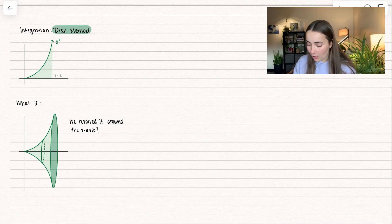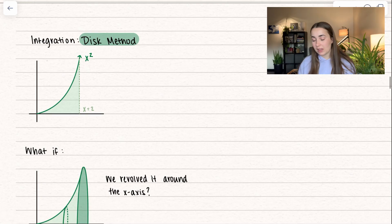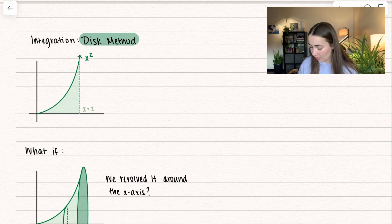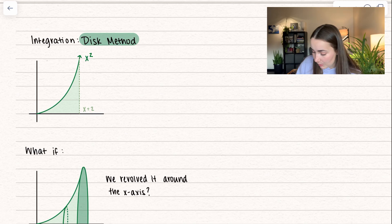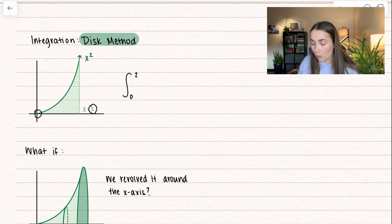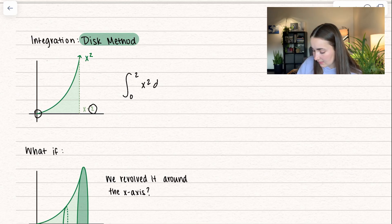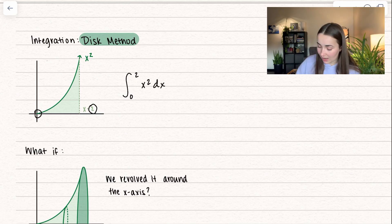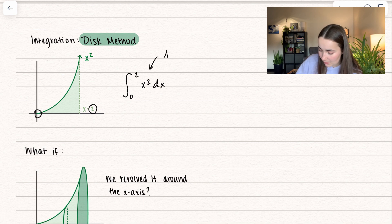Let's talk about a normal integral. If we were to find the area between the x-axis and our curve, we know that we would integrate. We would integrate within our bounds — starting at zero and going all the way to two. So this would be the integral between zero and two of our function x squared dx. And there we would be able to solve for the area. So this single integral represents the area.